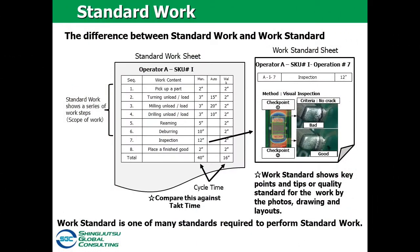Next is the difference between standard work and work standard. Standard work shows how one worker works — how much work area is assigned based on the tack time, in what order the work is performed, and how long the series of work is performed. On the other hand, the work standard indicates the key points and points to be noted when performing a certain work, and indicates how to perform the work.